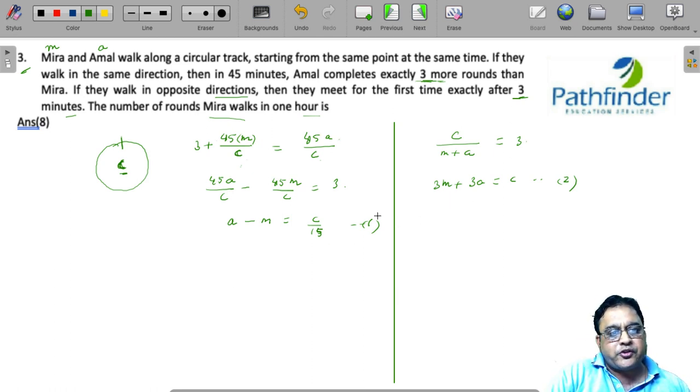So, now you have two equations which you are supposed to solve. I just multiply the first equation by 3 and I am going to get 3A minus 3M. 3A minus 3M and I will get C by 5 which is your third equation. Just add up these two equations. You will get 6 times A is 6C by 5 or the speed A is C by 5.